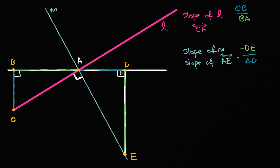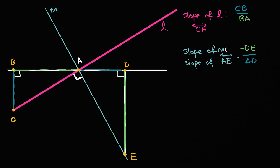Some of you might already be quite inspired by what we've written. Now we just have to establish that triangles CBA and ADE are similar, and then we'll be able to show that the slopes are the negative reciprocal of each other. So let's show that these two triangles are similar.